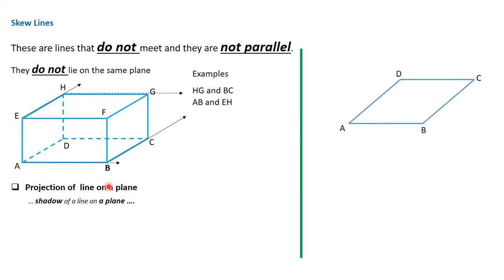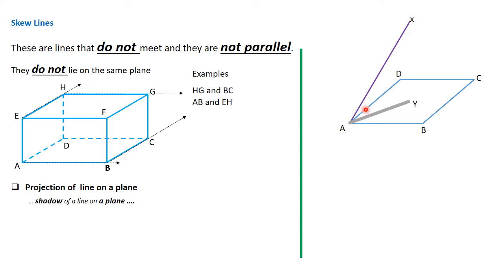We have the plane ABCD and the line AX. What would be the projection of AX on ABCD? The answer is the shadow of the line AX on the plane ABCD, and that shadow is going to be the line AY. Since AY is a shadow of AX, it's because there's light coming from the top such that X falls on Y and every point falls on some point along the line AY. Therefore, the line AX projected on the plane ABCD will be the line AY.